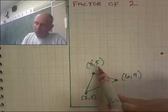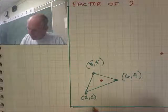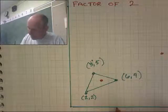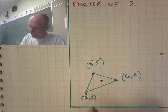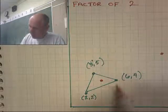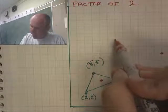And our last one is 3,5, which becomes 6,10. So there's 3, 4, 5, 6, 7, 8, 9. Oh, excuse me. 3, 4, 5, 6, 1, 2, 3, 4, 5, 6, 7, 8, 9, 10.